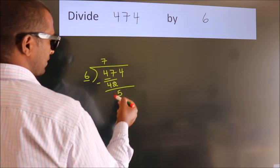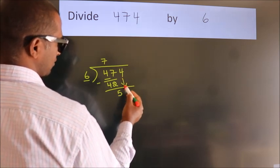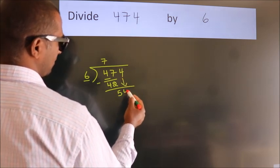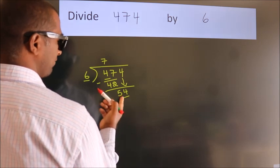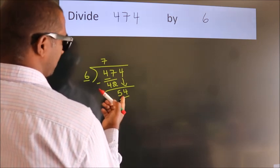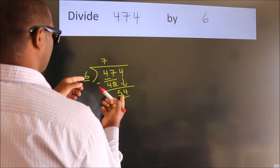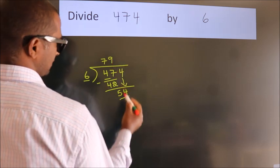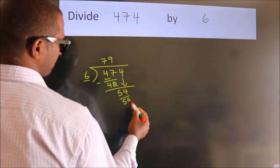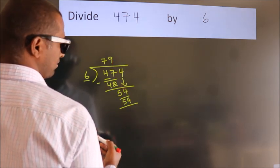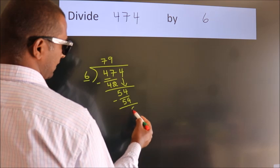After this, bring down the beside number. So, 4 down — making 54. When do we get 54 in the 6 times table? 6 nines 54. Now we subtract. We get 0.